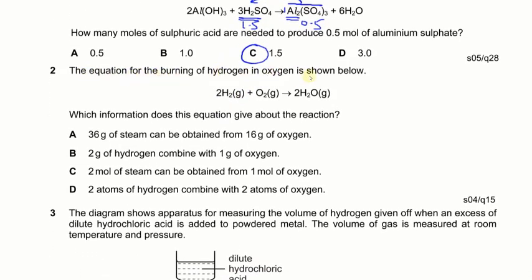The next question: the equation for the burning of hydrogen in oxygen is shown. Which information does this equation give about the reaction? Two moles of hydrogen — that's 4 grams — plus oxygen at 32 grams (16×2) makes two moles of water (2×18 = 36 grams). So 4 grams of hydrogen reacts with 32 grams of oxygen to make 36 grams of water. Option A is wrong.